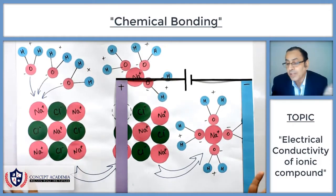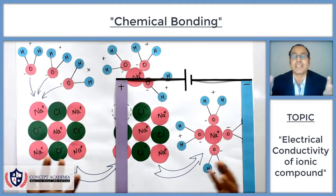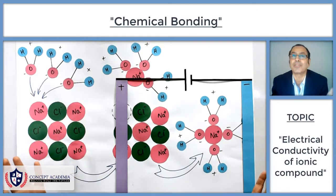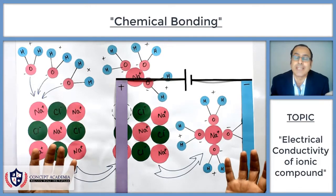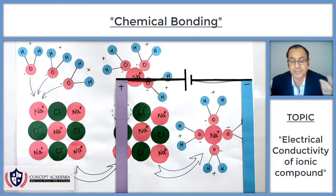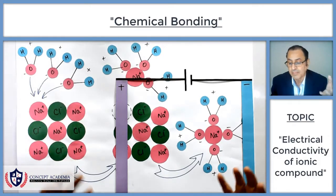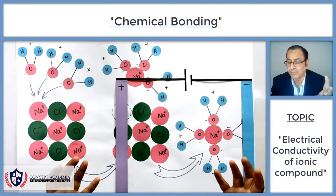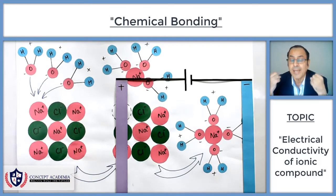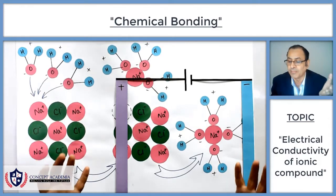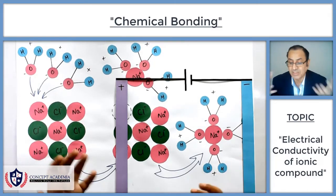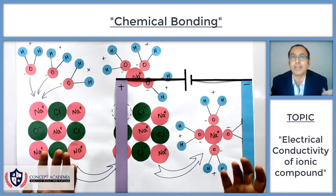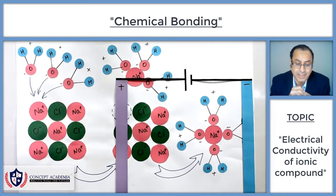So, ionic compounds in the solid state cannot conduct electricity — the positive and negative ions are present but not free to move. But in the molten form and in the aqueous form, they can move. These positive and negative ions can move, so they can conduct electricity.